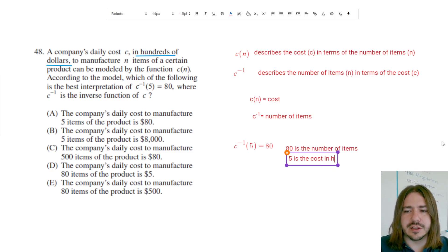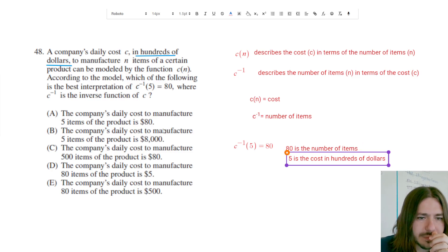Now I'm just going to look through my answer choices and see which one describes that. Part letter A says the company's daily cost to manufacture five items of the product is 80 dollars. So that's backwards. Not only is it backwards, but they got the dollar amount wrong.